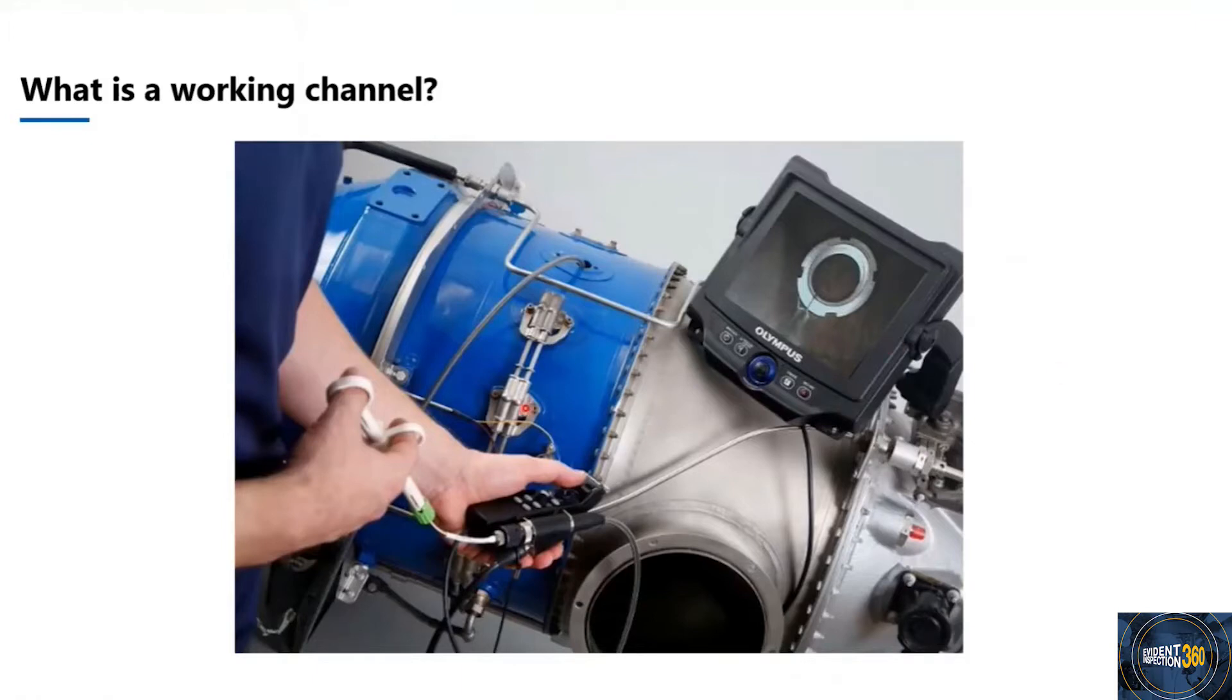If you look at the picture here, you see the inspector. He has the controller of the retrieval tool, and then the wire comes out of it, goes into what we call the channel port, and then the wire goes into the actual insertion tube and into the inspection area.